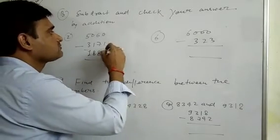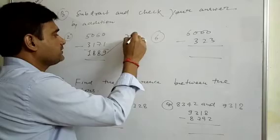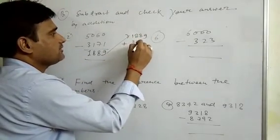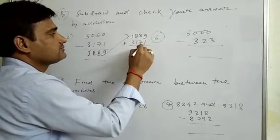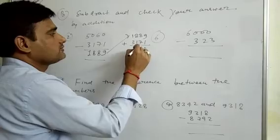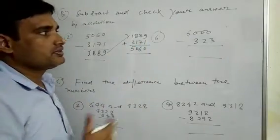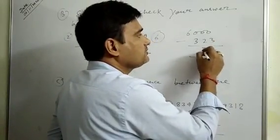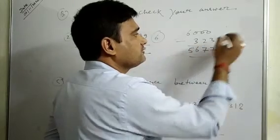Now to check, we write 1889 plus 3171. We add: 9 plus 1 is 10, write 0 carry 1. 8 plus 7 plus 1 is 16, write 6 carry 1. 8 plus 1 plus 1 is 10, write 0 carry 1. 1 plus 3 plus 1 is 5. We get 5060. Next problem: 10 minus 3 is 7, 9 minus 2 is 7, 9 minus 3 is 6. Answer: 5677.